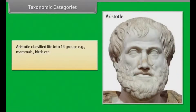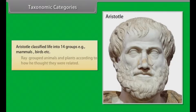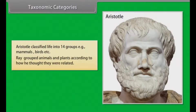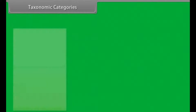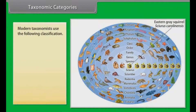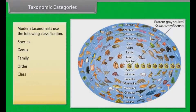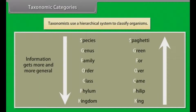Aristotle classified life into 14 groups, for example, mammals, etc. Ray grouped animals and plants according to how he thought they were related. Modern taxonomists use the following classification: species, genus, family, order, class, phylum, kingdom, and domain. Taxonomists use a hierarchical system to classify organisms.